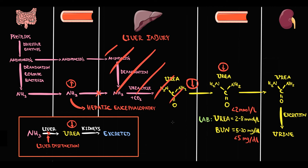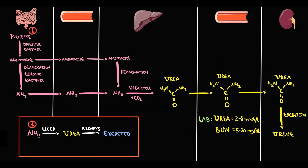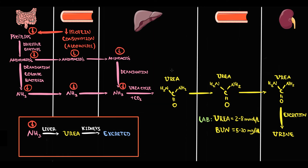Another reason for low urea is decreased protein consumption, which is quite rare and usually occurs in alcoholics. With decreasing protein intake there are fewer amino acids, so deamination decreases, ammonia formation decreases, and therefore liver production of urea also decreases.